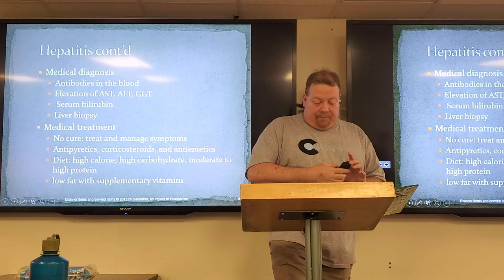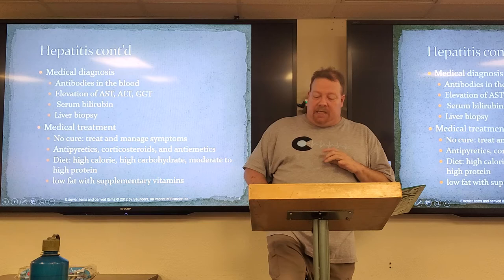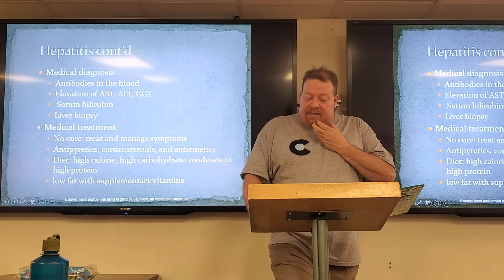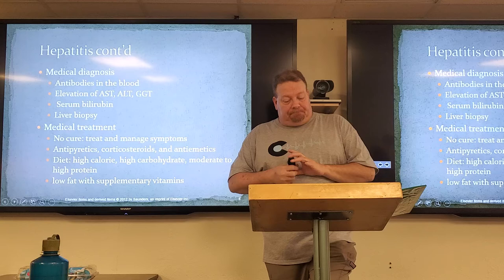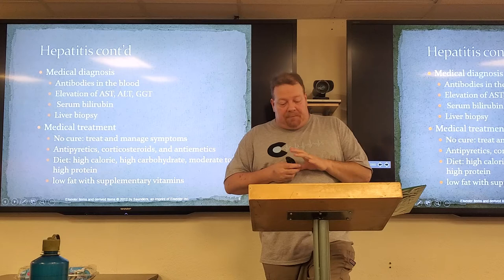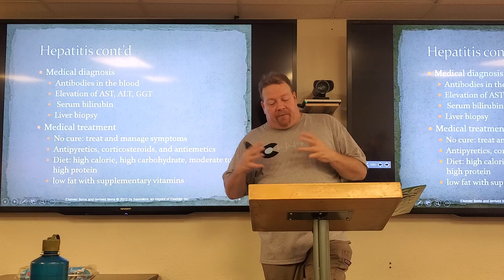Medical diagnosis: we're going to look at antibodies in the blood. They're going to have an elevation of AST, ALT, and GGT. They're going to have elevation of serum bilirubin. We can further diagnose by taking a liver biopsy — a needle aspiration of the liver. Medical treatment: usually no cure; we treat and manage symptoms. We're going to use antipyretics to prevent fevers and corticosteroids to reduce inflammation.